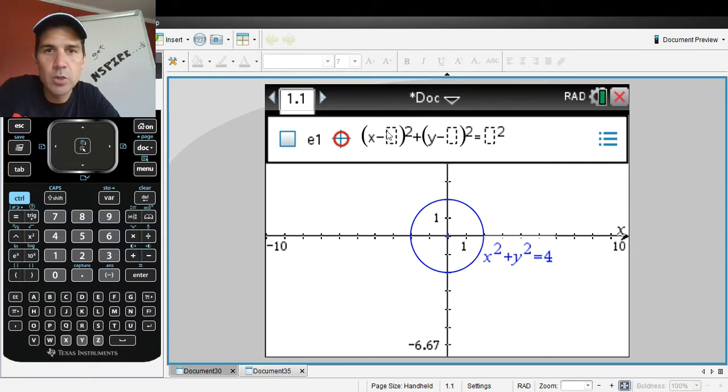So again, this is wherever your x coordinate is, that's what you put in there. So let's say the x coordinate, the center, let's say it's at two. And then let's say out here it's at negative three.